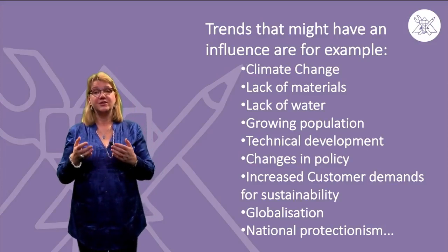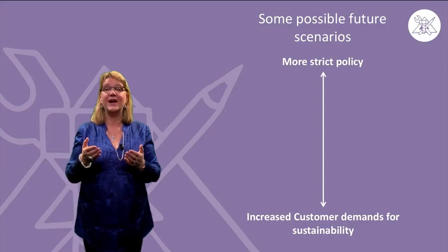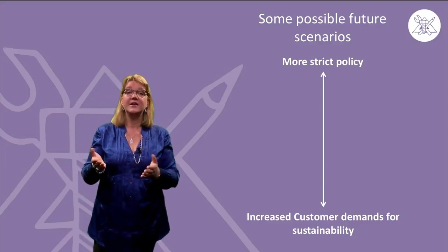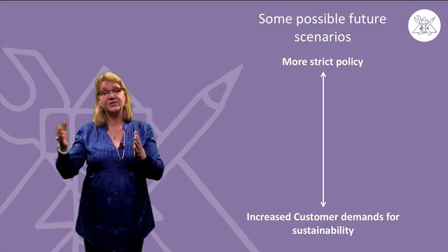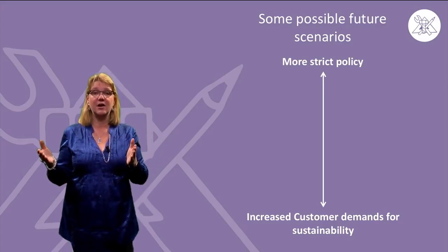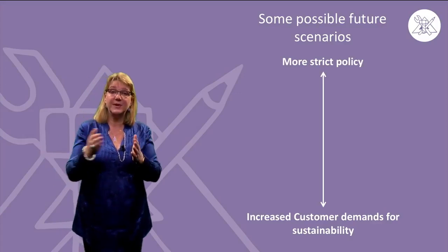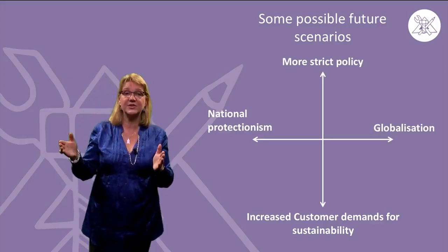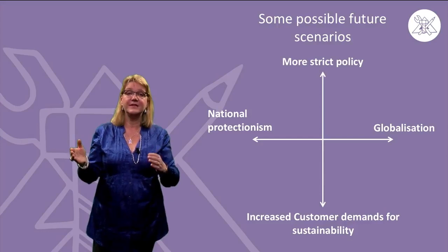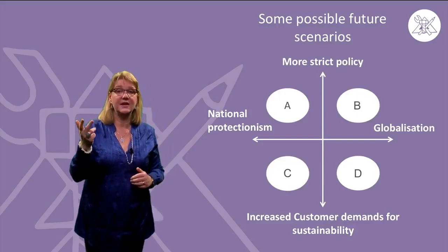Choose some trends of importance for you and put them on perpendicular axes in a diagram. For example, changes in policy versus increased customer demands for sustainability on one of the axes. Now place globalization versus national protectionism on the other. This leads to four fields: A, B, C and D.